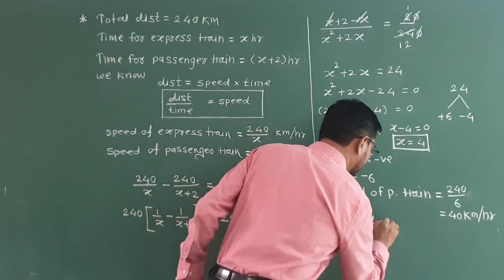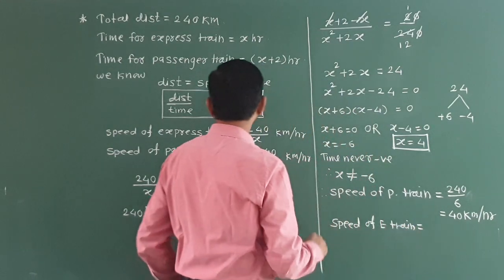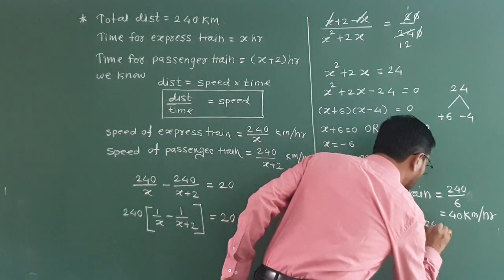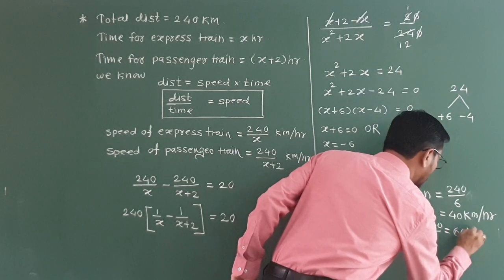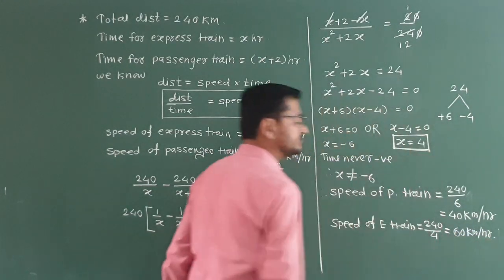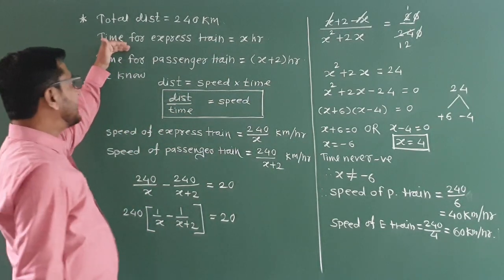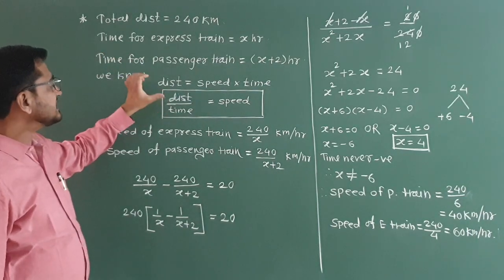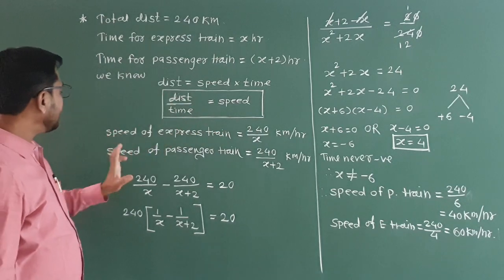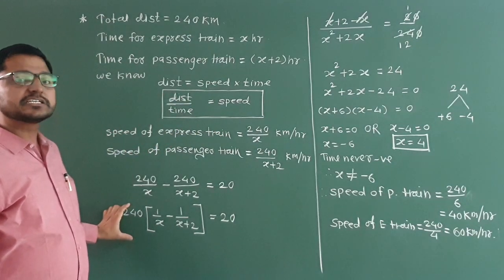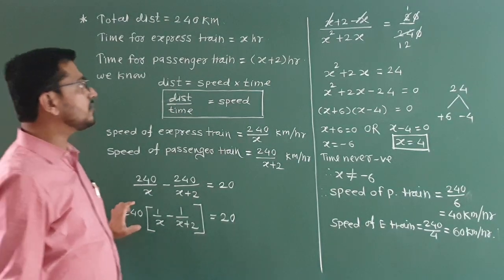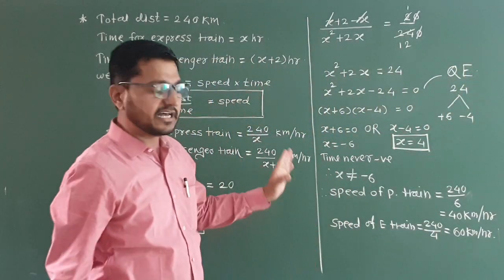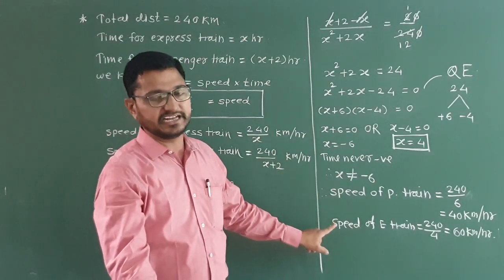And the speed of the express train is 240 divided by x, that is 240 divided by 4, which equals 60 km per hour. So to summarize: time for express is x, passenger is x plus 2; using distance divided by time equals speed, we applied the second condition on speed difference, formed the quadratic equation, and solved it. Thank you, see you in the next video.